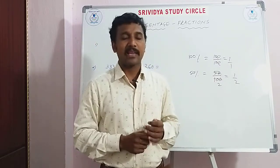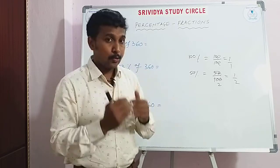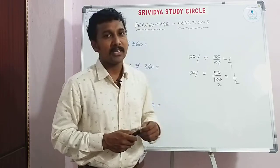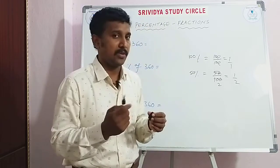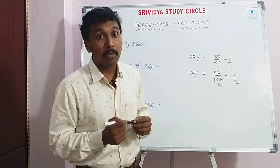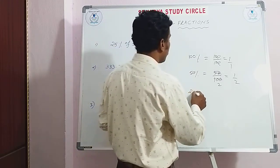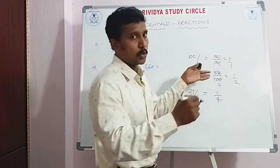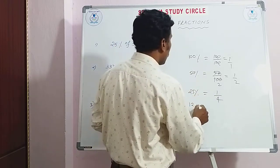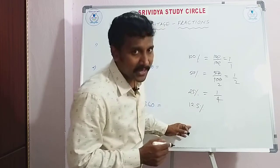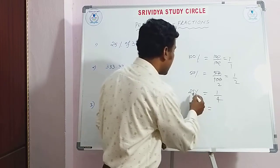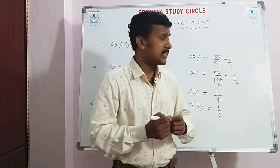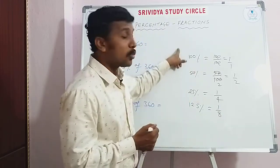25% means 1/4. Now 12.5% — that is 12 and a half percent. Since 25% is 1/4, 12.5% is half of 25%, which means half of 1/4, so it equals 1/8. Likewise, these basic values you should know very well.